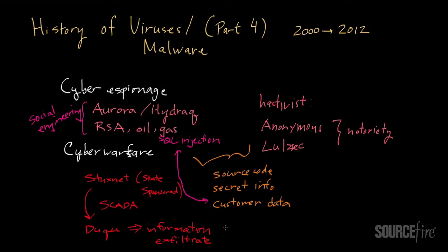More recently there's been a new threat called Flame that got a lot of attention — I did some videos on Flame so you can check those out for more details. Flame actually has a lot of common componentry with Stuxnet and based on its level of sophistication it also appears to be a state-sponsored cyber weapon. That concludes my initial series on the history of computer viruses and malware.